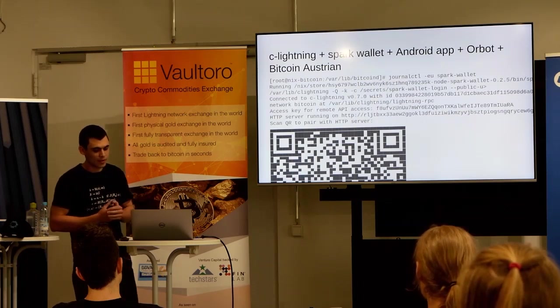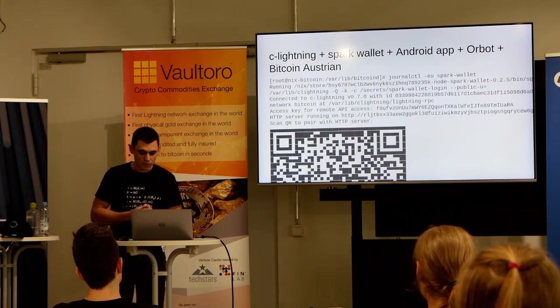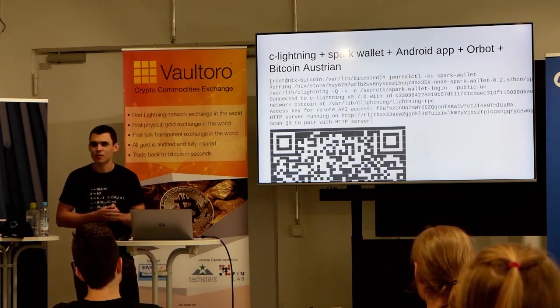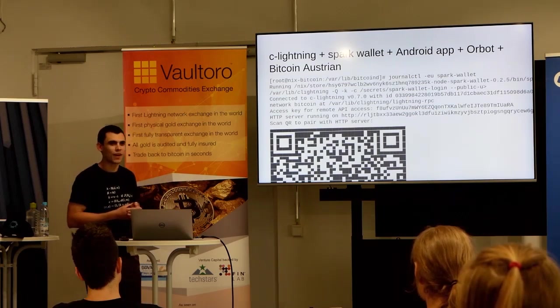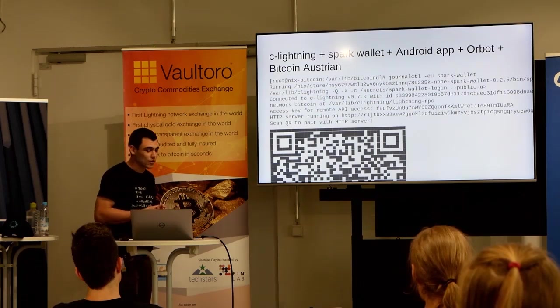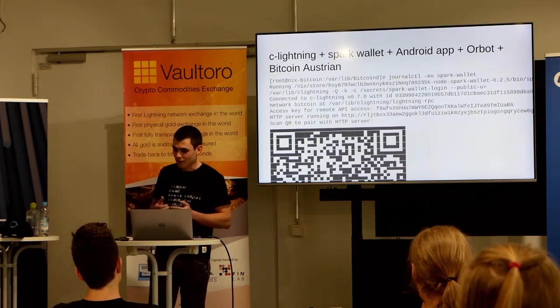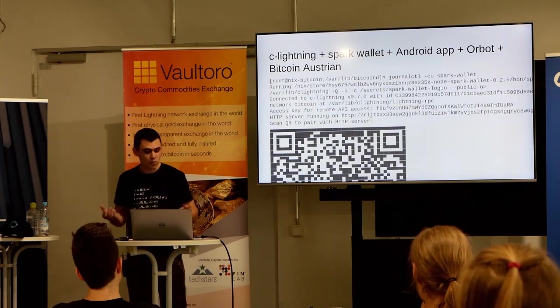The newest Spark Wallet release fixes this, though it's not released yet unfortunately. But Wasabi Wallet is nice enough to provide an API with current prices that you can reach through Tor.